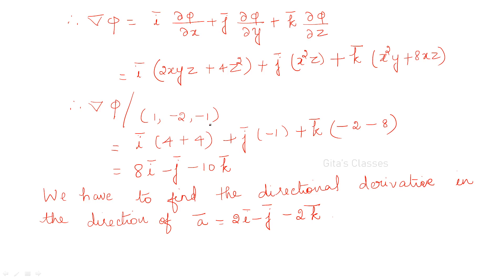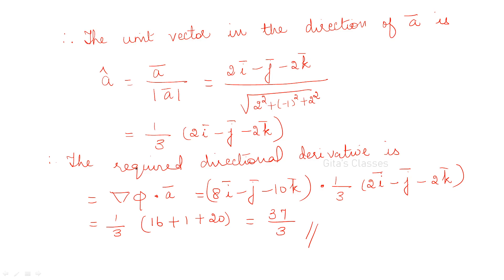At the point (1, −2, −1), replace x by 1, y by −2, z by −1 to get del phi. To find the directional derivative in the direction of a-bar = 2i − j − 2k, find a-cap = a-bar divided by |a-bar|. The required directional derivative is del phi dot a-cap, giving 37/3.